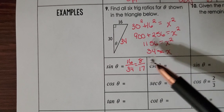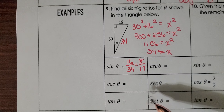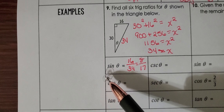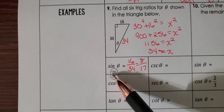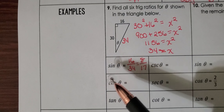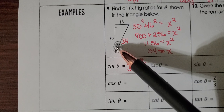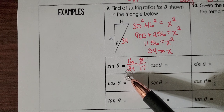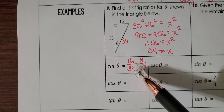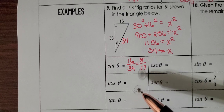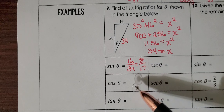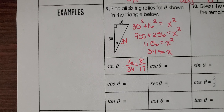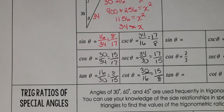Now that the hypotenuse is 34, we can fill in the trig ratios. Sine is equal to opposite over hypotenuse. Here theta's opposite is 16 and the hypotenuse is 34, so 16 over 34 simplifies to 8 over 17. Pause the video and fill in the other five trig functions.